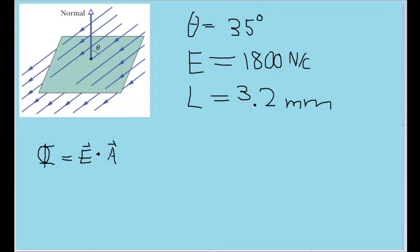Or in other words, the normal vector coming out of the surface, but in magnitude is just equal to the area of the surface itself.